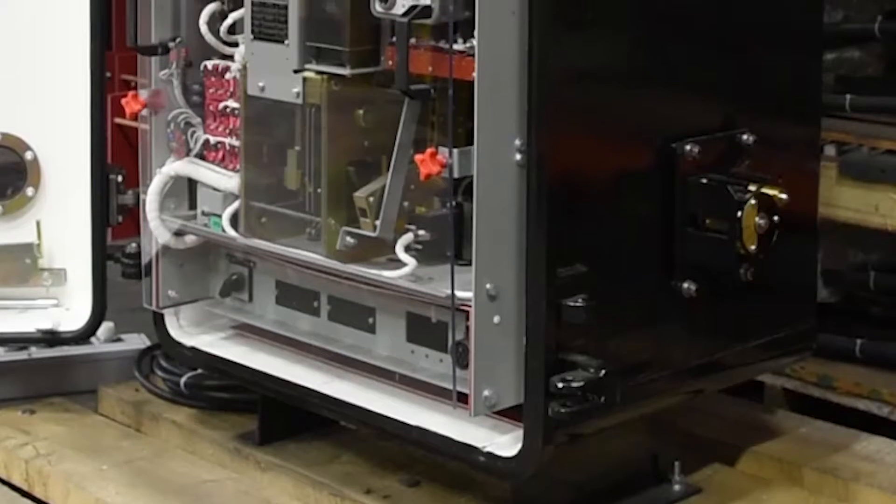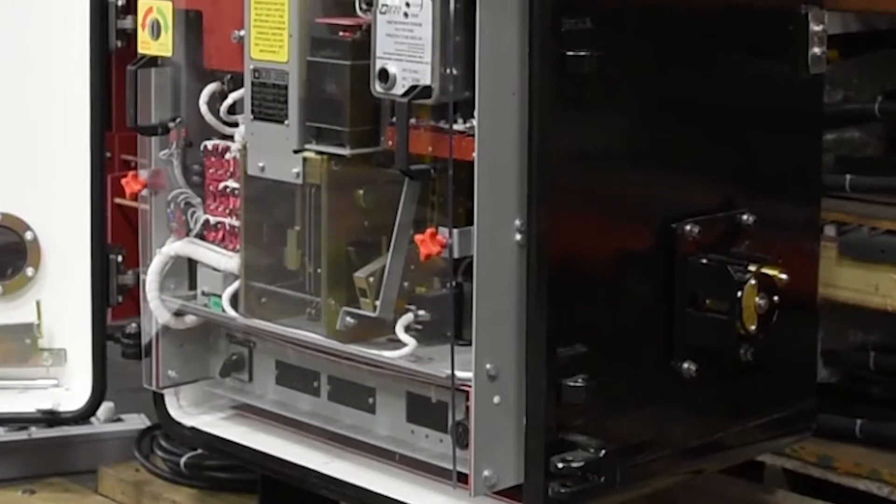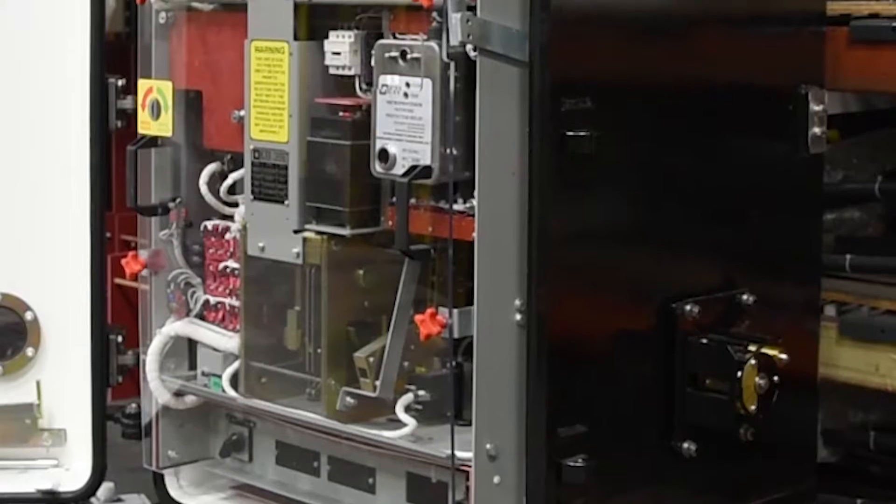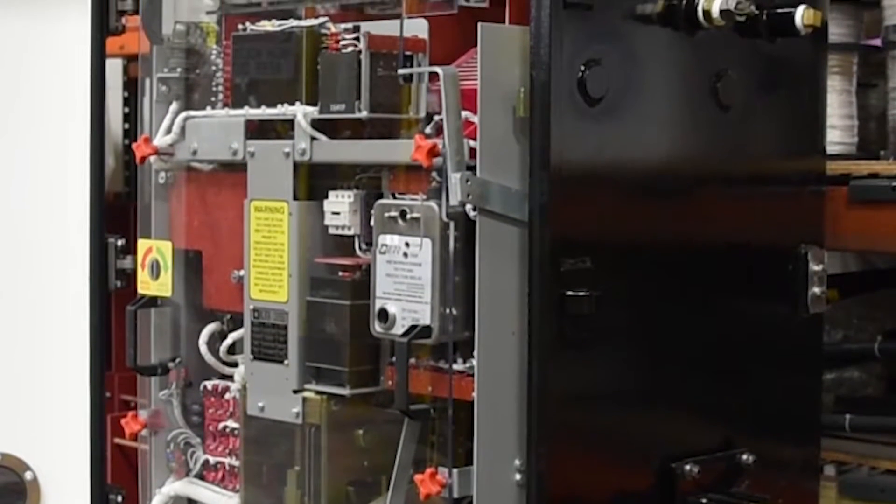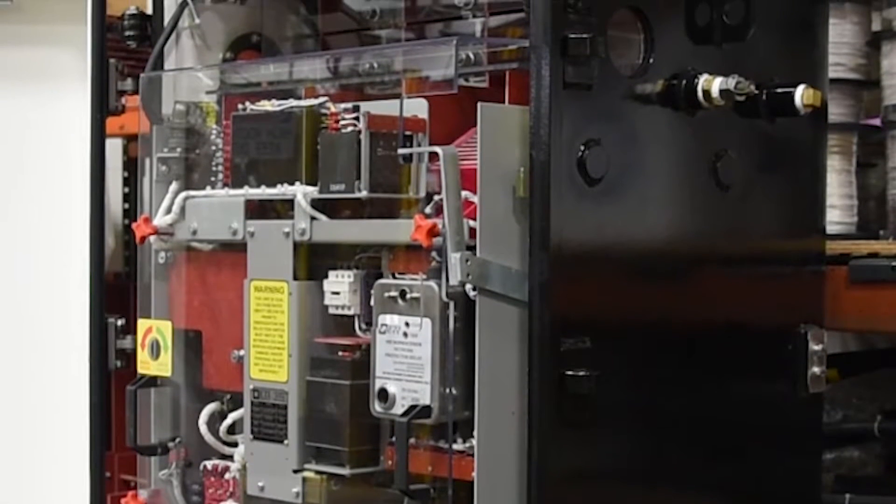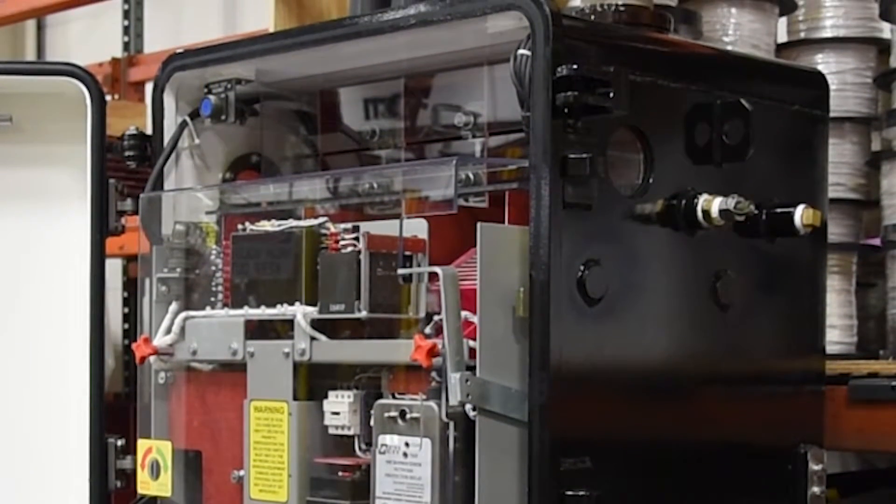In this video, we will be providing an overview of the Richards 416NP series. This network protector is a small frame 2250 amp dual voltage unit selectable between 125-216 and 277-480 volts.